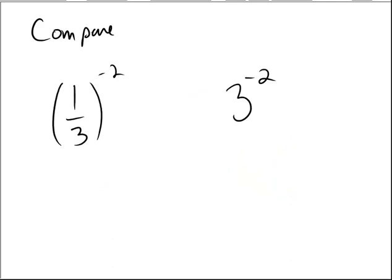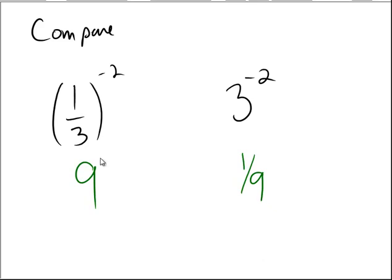Finally, let's take these two. We have 1 third, a fraction, being raised to the negative 2 power, and the number 3 being raised to the negative 2 power. 1 third squared is 1 ninth, but due to the negative exponent, we take the reciprocal of 1 ninth, giving us 9. On the right-hand side, 3 squared is 9, but due to the negative exponent we write 1 ninth. Between these two numbers, the larger is 9, so the correct symbol is the bigger-than symbol.